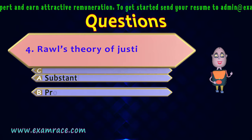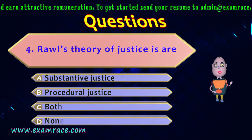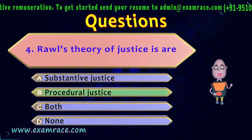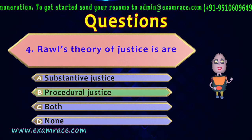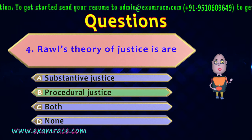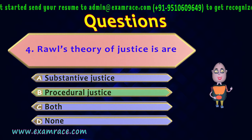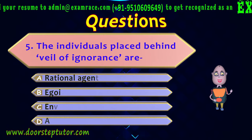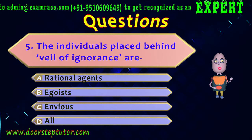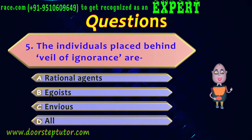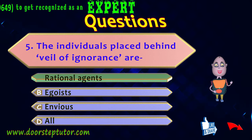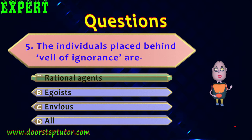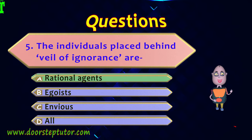The fourth question: Rawls' theory of justice is — the correct answer is procedural justice, as stated at the beginning of the discussion that his theory is based on pure procedural justice. The fifth and last question: the individuals placed behind the veil of ignorance are — the correct answer is A: they are rational agents. Thank you.